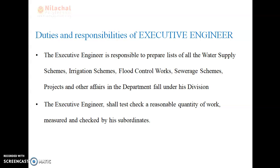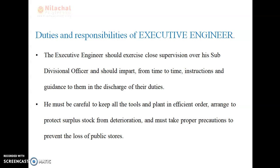The executive engineer is responsible to list out and execute those works. He shall test and check a reasonable quantity of work, measure and check by his subordinates. The executive engineer is also responsible to prepare the list of all water supply schemes and irrigation schemes. The executive engineer should exercise close supervision over his supervisors and should impart from time to time instruction and guidance to them in the discharge of their duties.